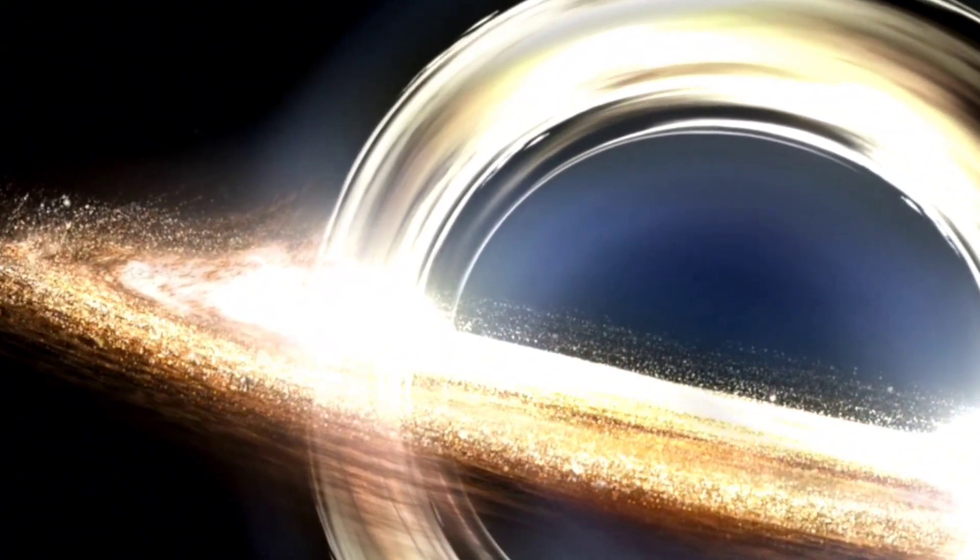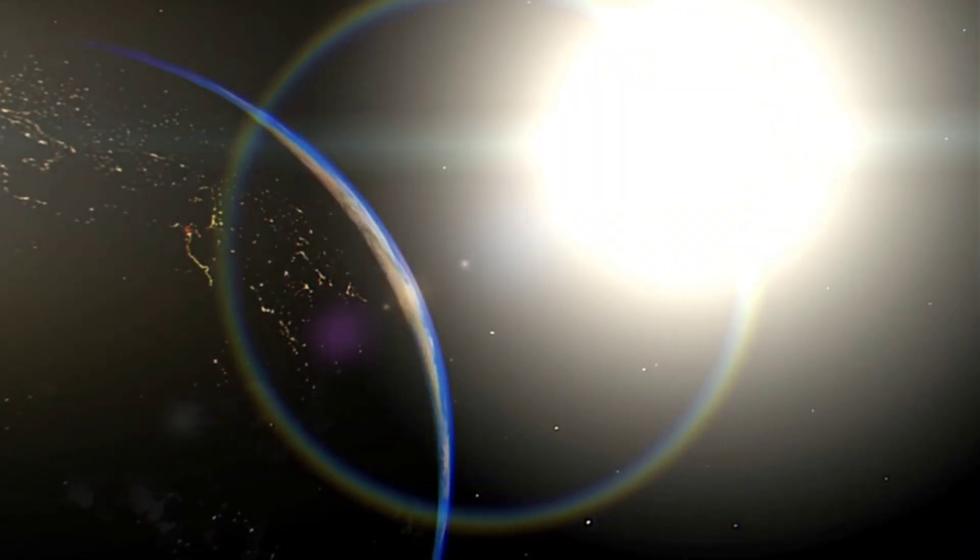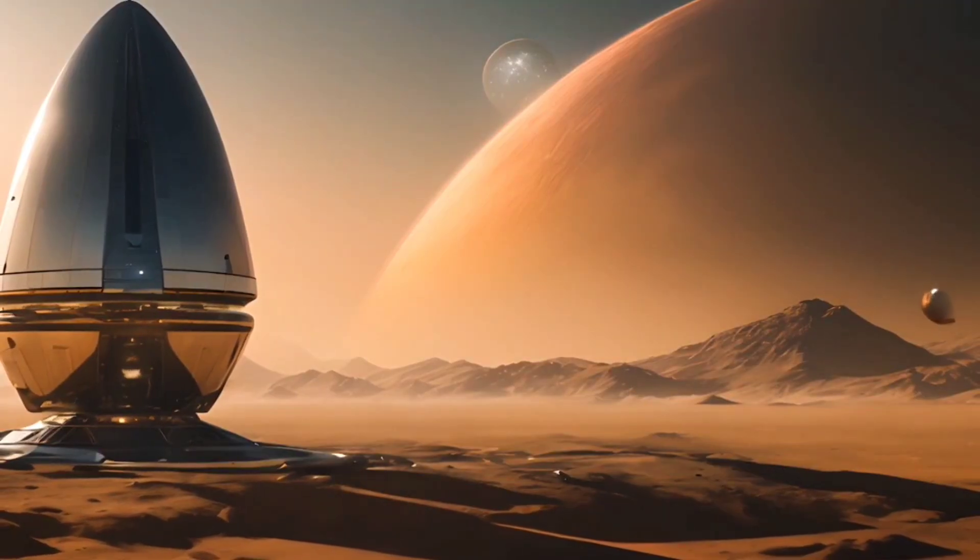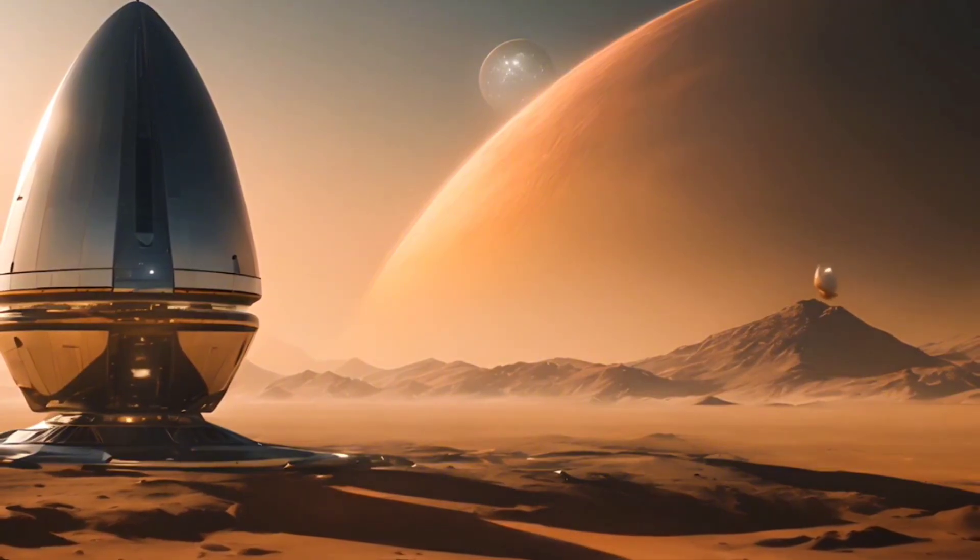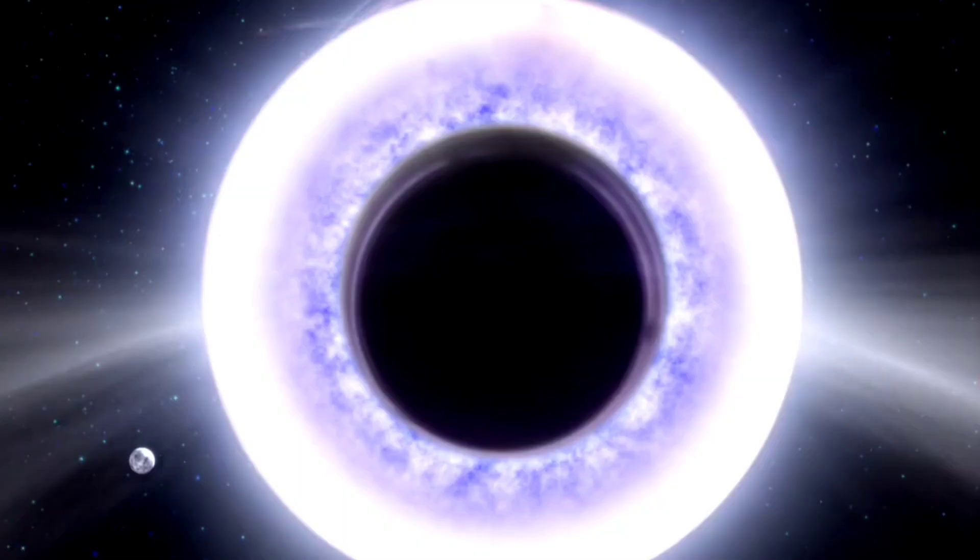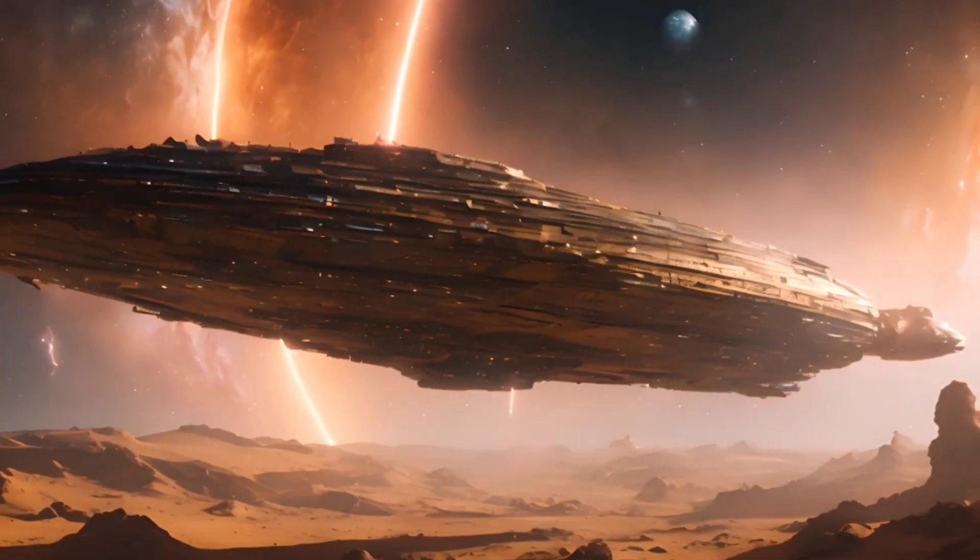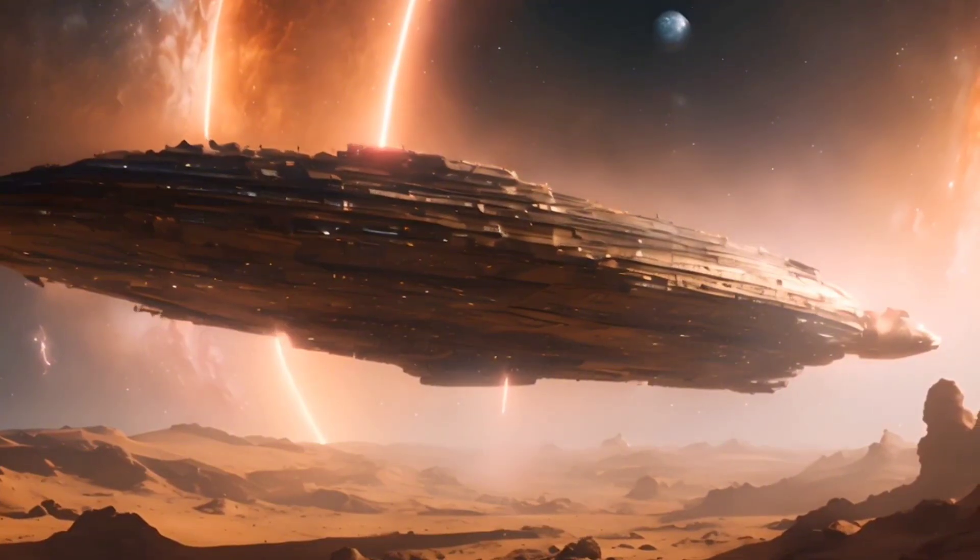Betelgeuse is a prominent figure in the constellation Orion, which is easily recognizable in the night sky due to its distinctive shape and bright stars. Also referred to as Alpha Orionis, it holds the title of the brightest and largest star in this constellation. Recent data collected by NASA's Hubble Space Telescope, along with observations from other observatories, have shown that Betelgeuse experienced a significant mass ejection in 2019. This behavior is unprecedented for a star of its type and has piqued the interest of astronomers worldwide.